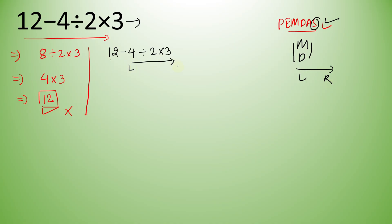Operating left to right, 4 divided by 2 gives 2. So we rewrite as 12 minus 2 times 3.